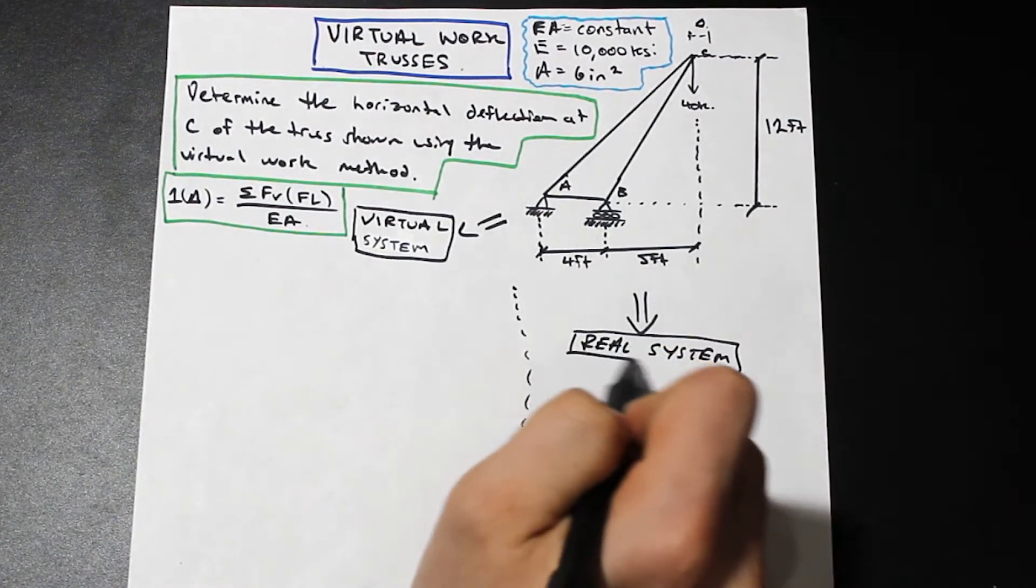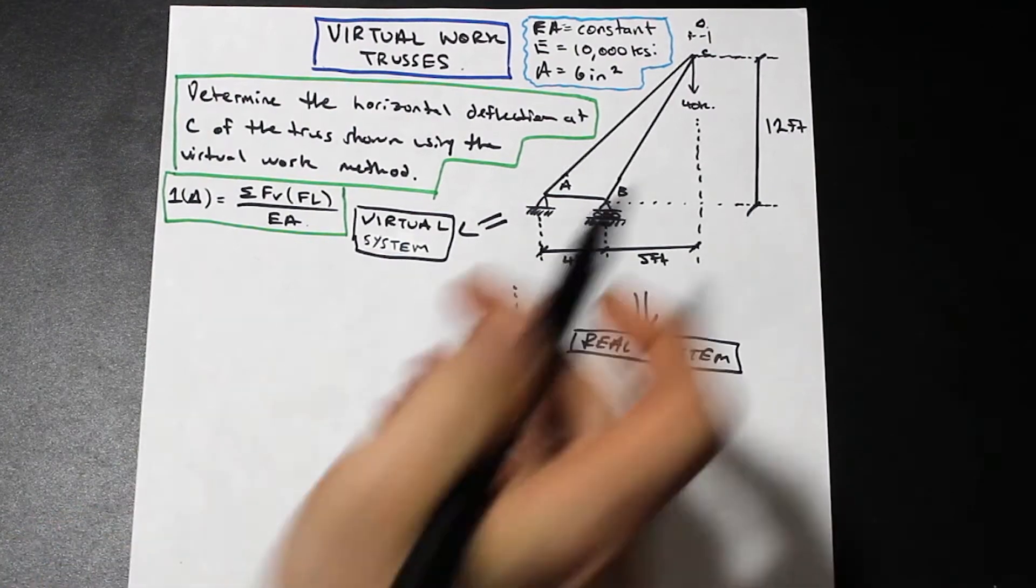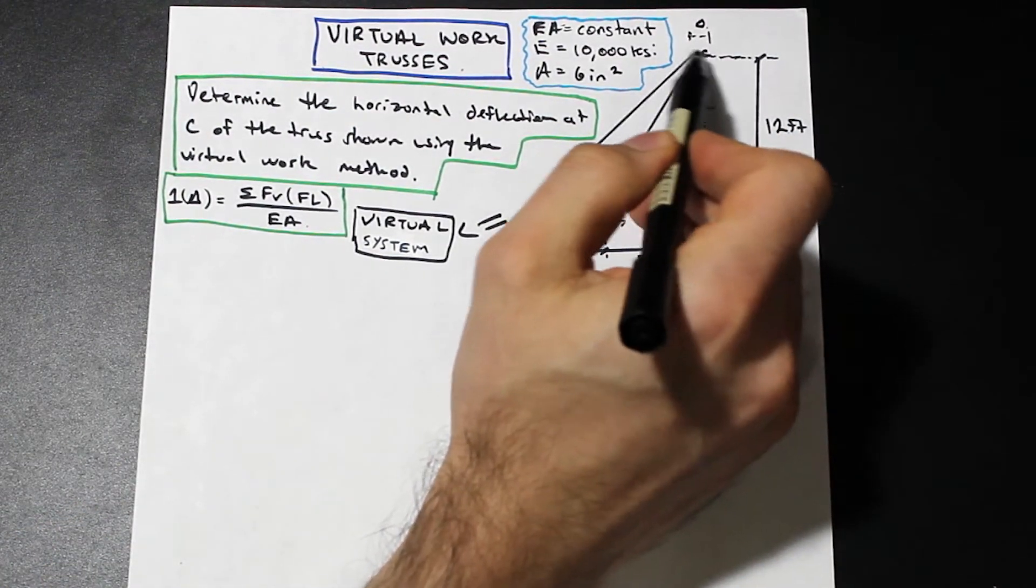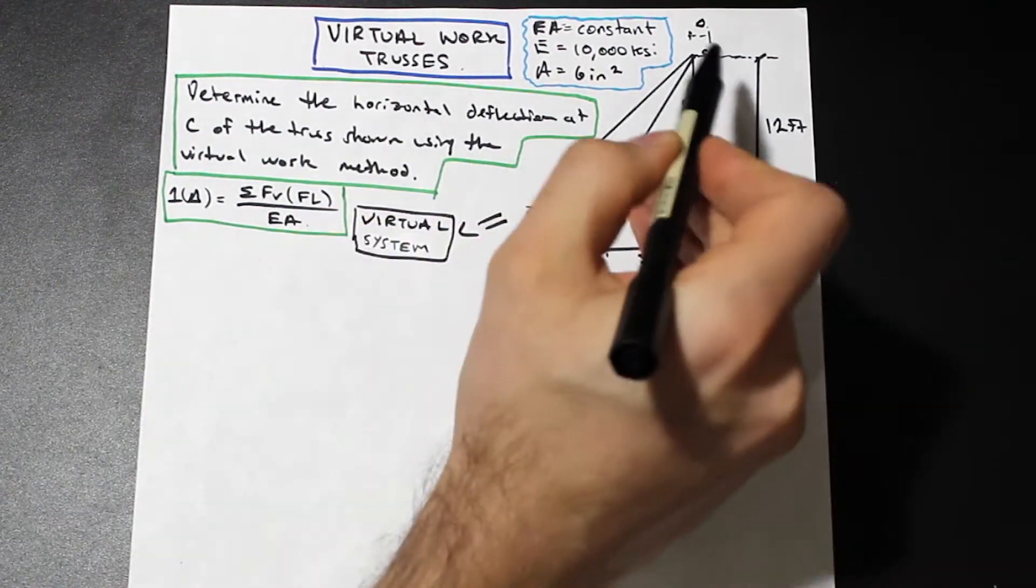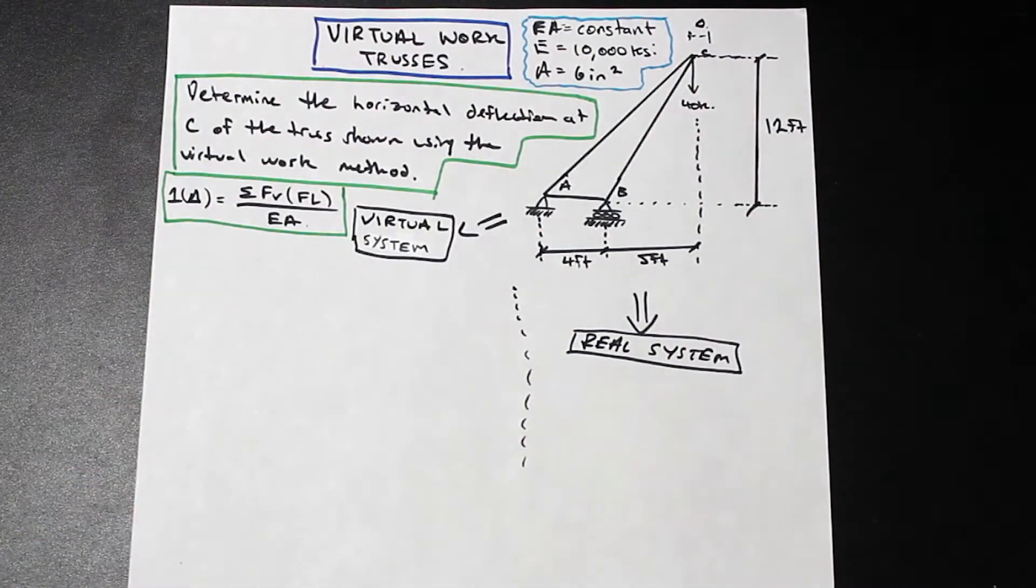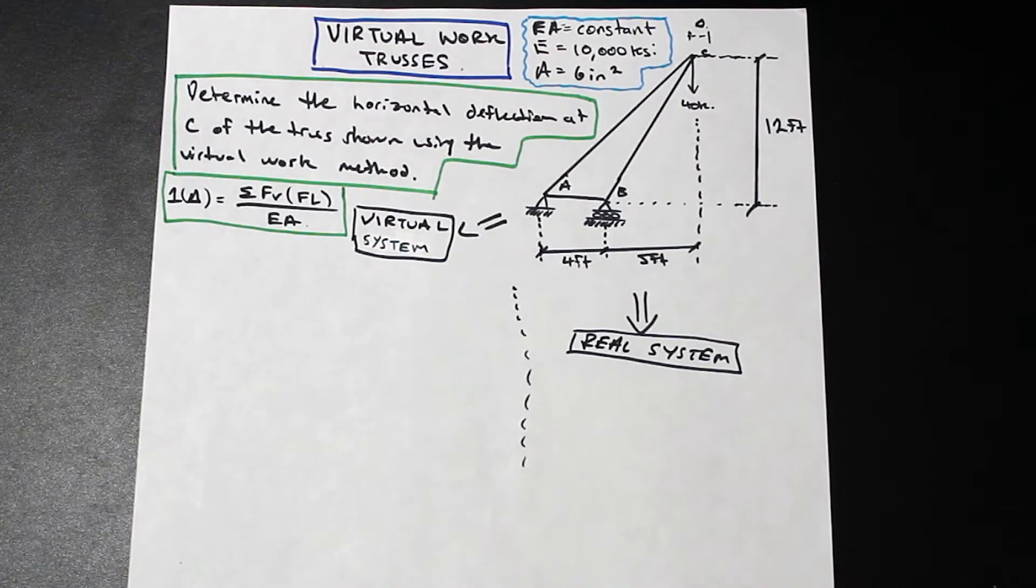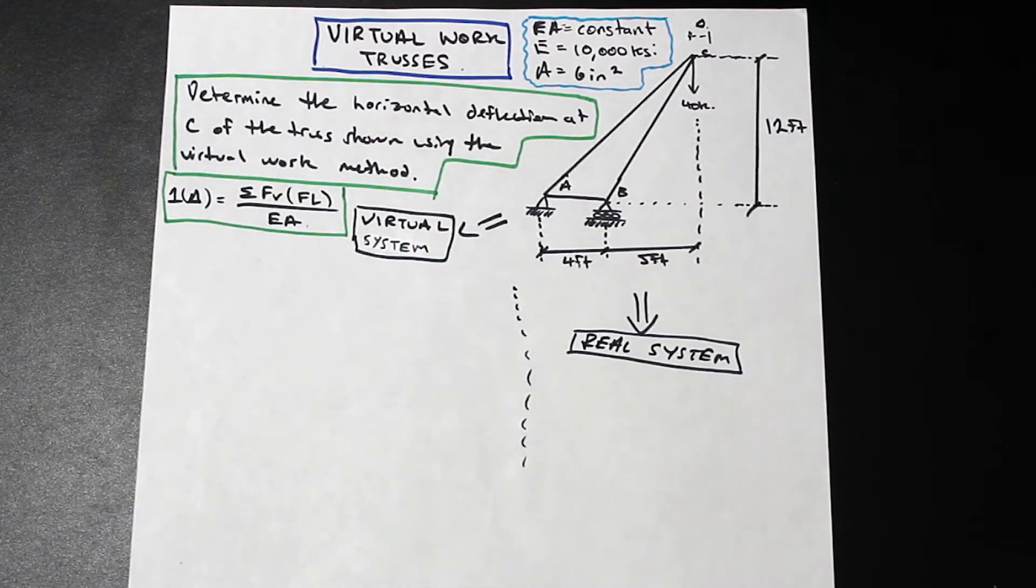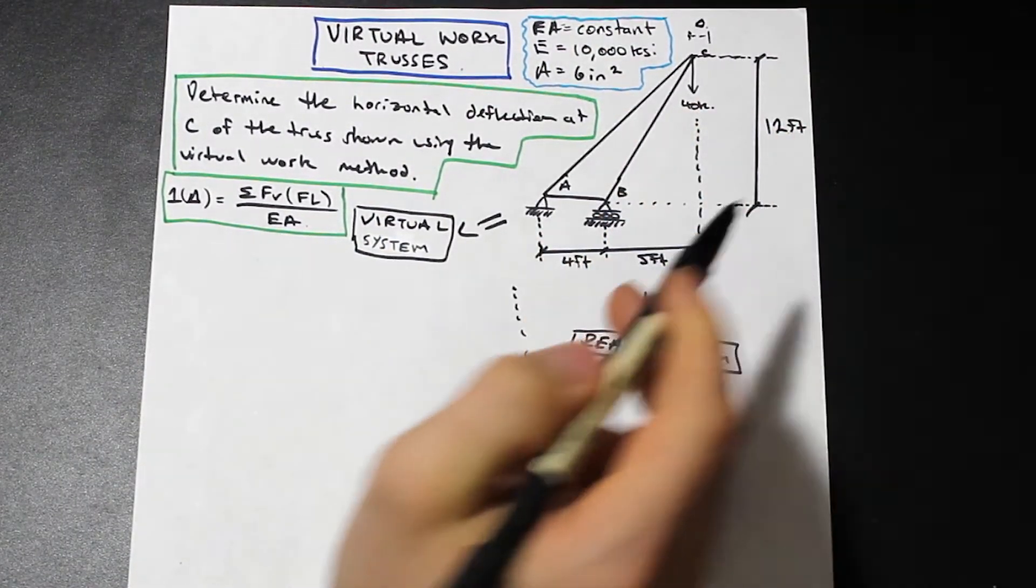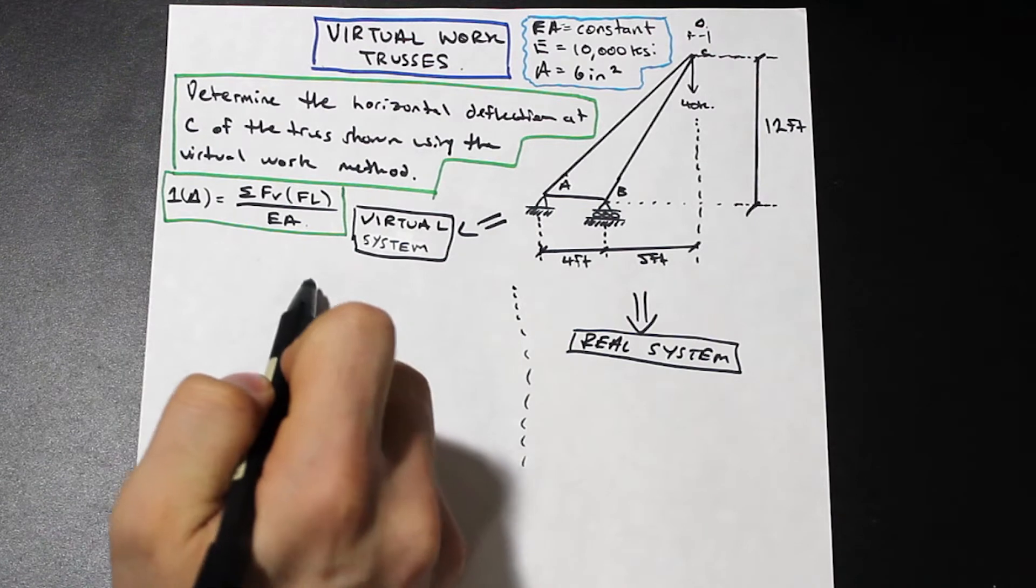Our virtual system is where we apply our one kip point load at the point that we want to consider. It's going to be at point C. And because we're looking for horizontal deflection, we're going to apply it in the right direction. Whatever answer that we get, if it's a negative answer, then we know that our deflection is to the left and vice versa. And this question is pretty obvious that the truss is going to be moving to the right.